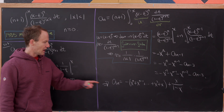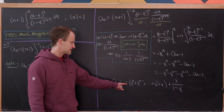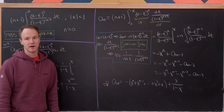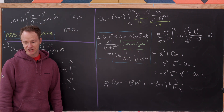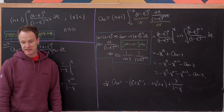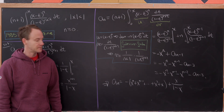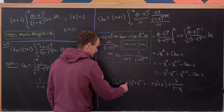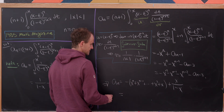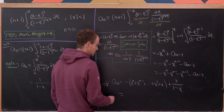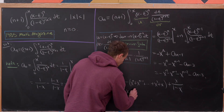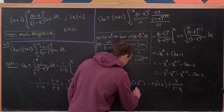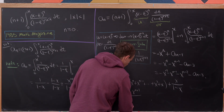So a sub n equals minus x to the n plus x to the n minus 1, all the way down to x squared plus x, plus a sub 0 which equals x over 1 minus x. We use the standard formula for a finite geometric series to finish.